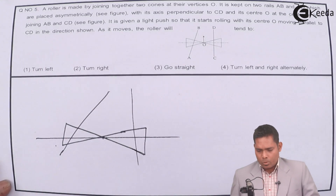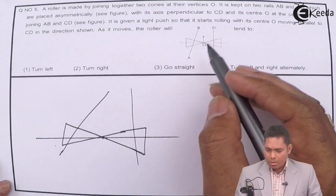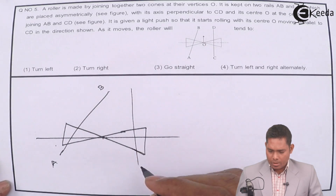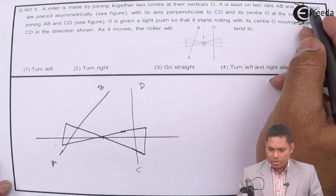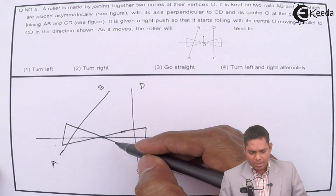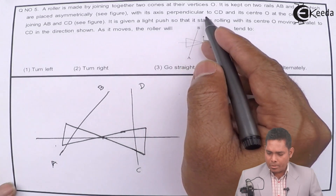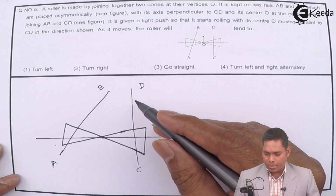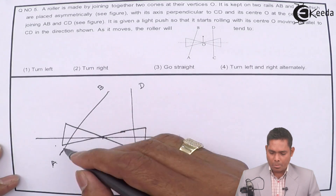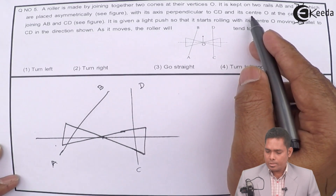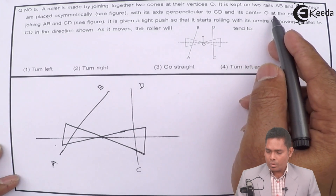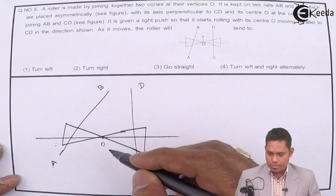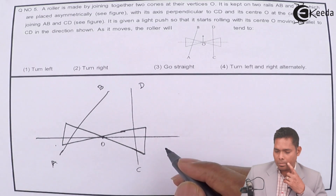So this is our rail A, B and this is our rail C, D — two rails A,B and C,D, asymmetrically placed. The axis of the roller is perpendicular to C,D but not perpendicular to A,B. And its center O is at the center of the line joining A,B and C,D.